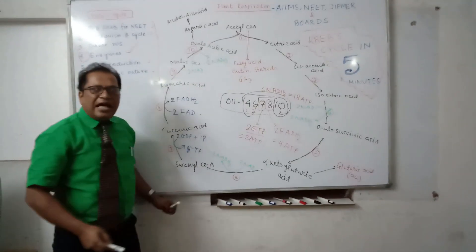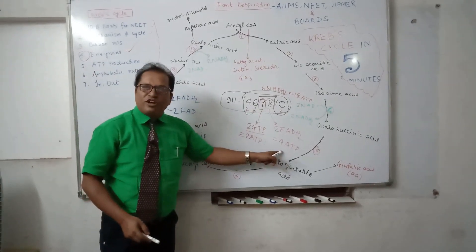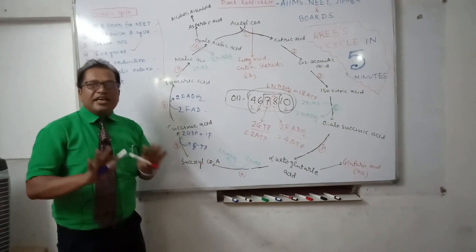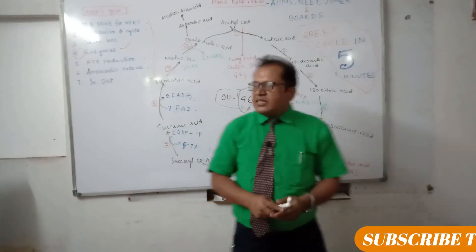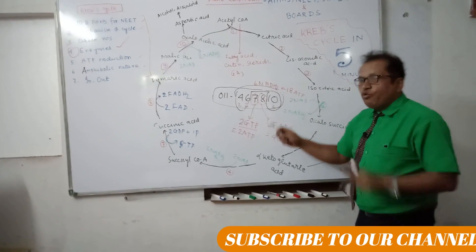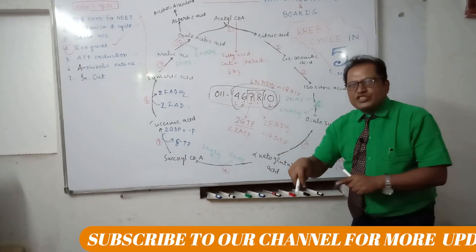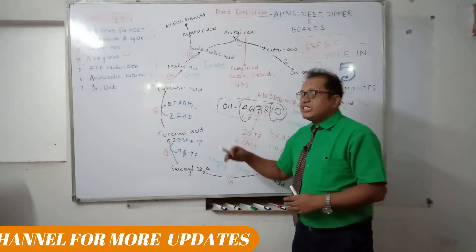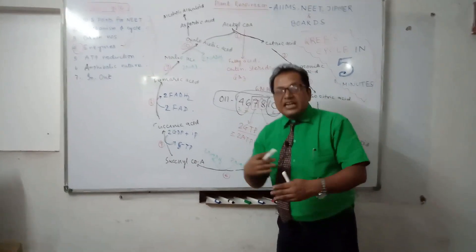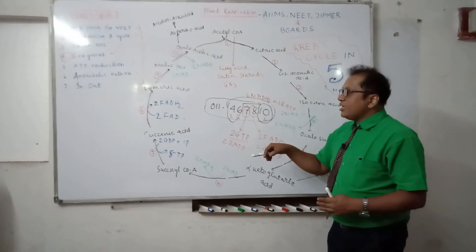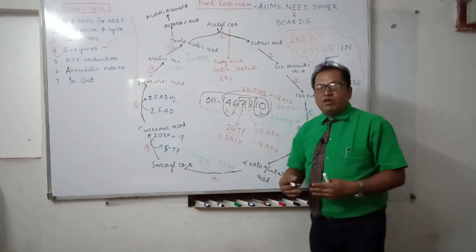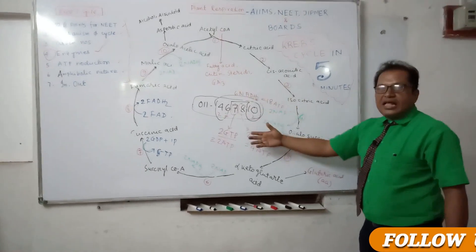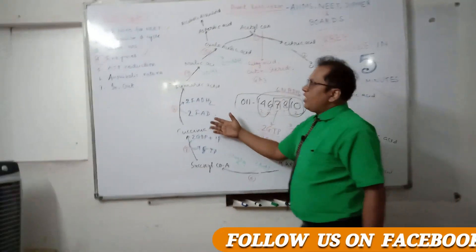So the total ATP formed in the Krebs cycle is 18 + 2 + 4 = 24 ATP. Now you can answer any question about how many ATP is formed, which acid is converted to which acid, and how many ATP molecules are formed in between. Any kind of question you can answer.